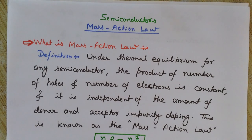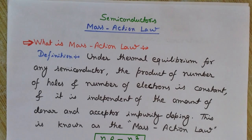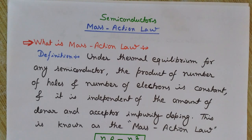This decrease is in comparison to the number of electrons and holes present in the intrinsic semiconductor before doping. Similarly, if I dope the intrinsic semiconductor with p-type impurities, that is trivalent impurities, then the number of holes in the valence band will increase while the number of electrons in the conduction band will decrease. This happens because the rate of recombination increases due to the presence of a large number of free electrons or holes after doping.